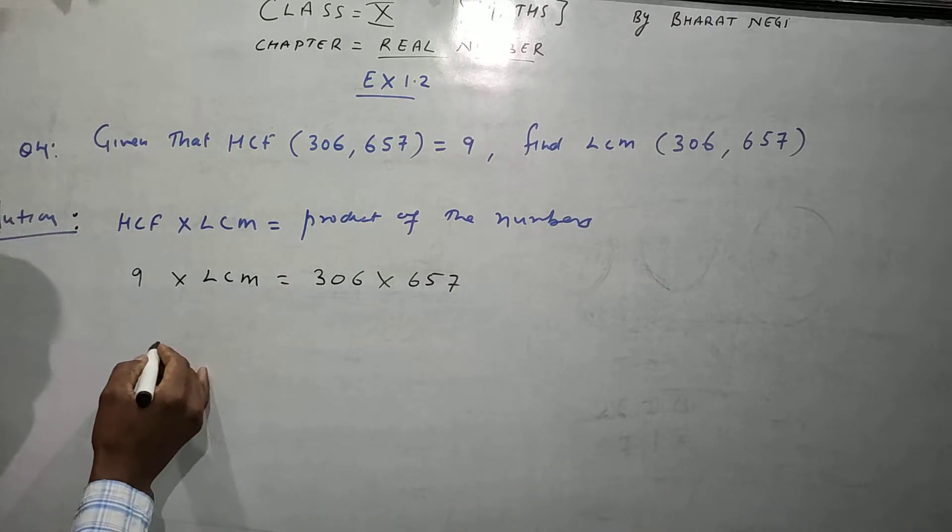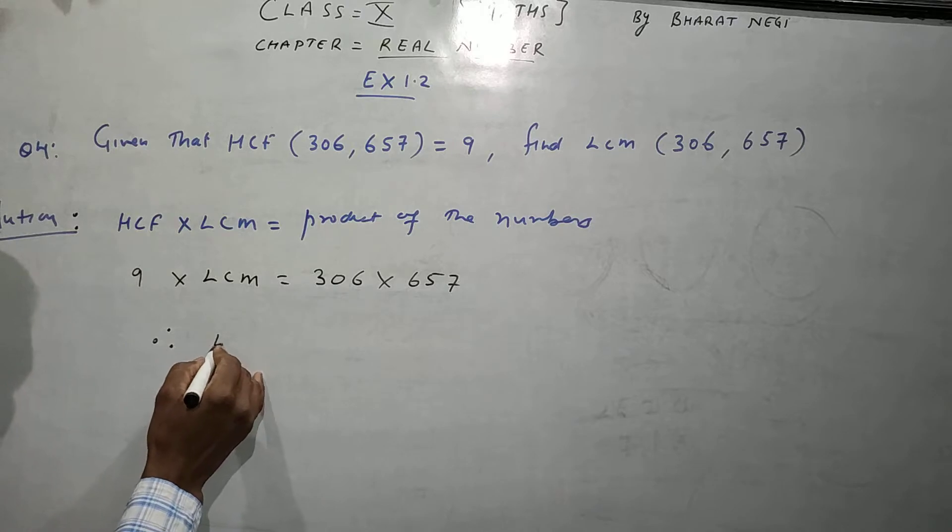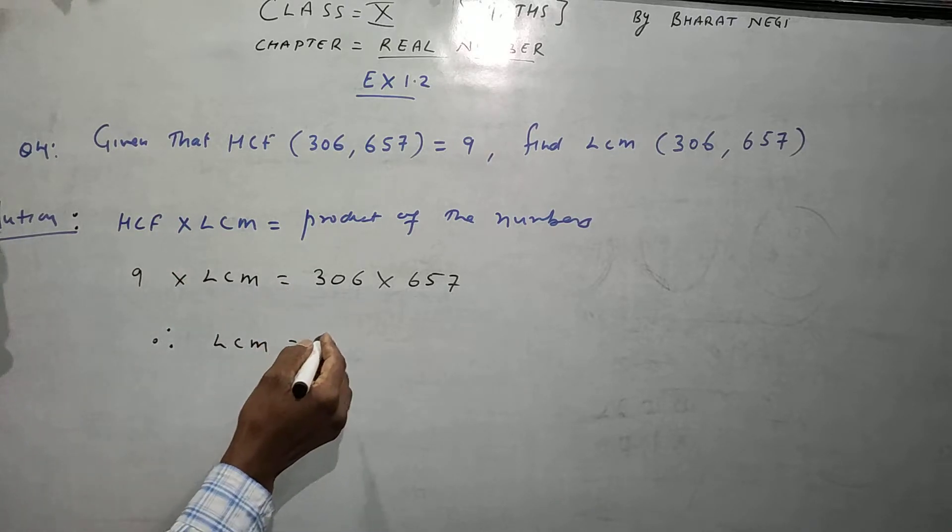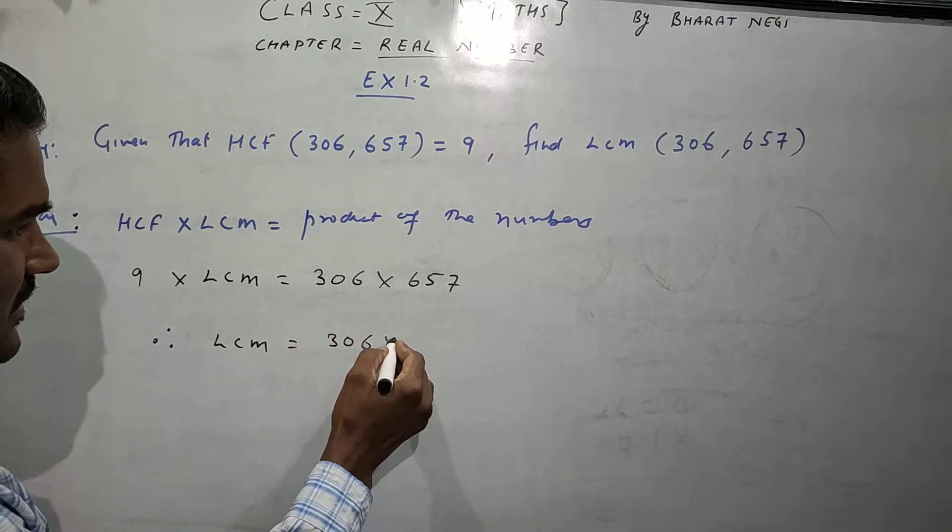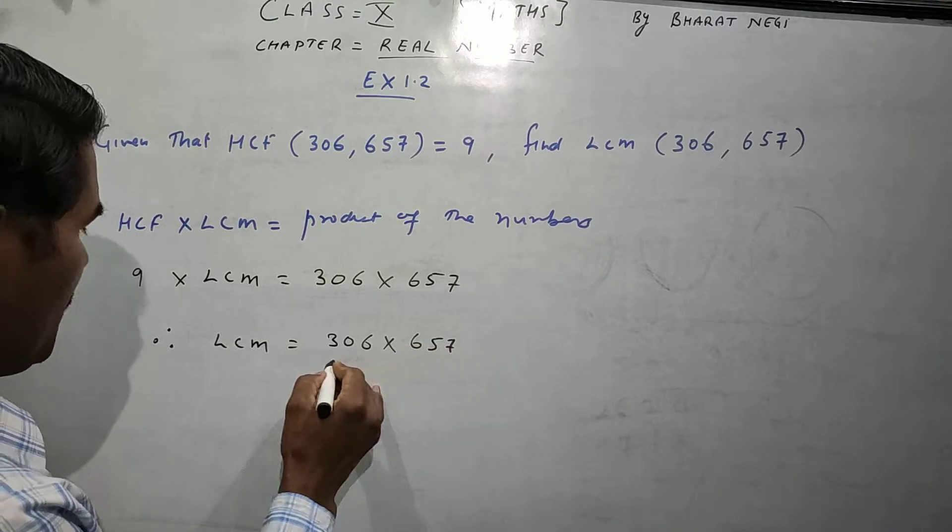Now, therefore, LCM - what will be the LCM? LCM equals 306 times 657 divided by 9.